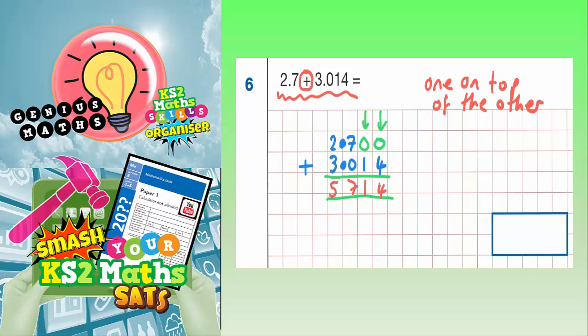The only thing that's missing is the decimal point. So your decimal point's just lined up in the correct column already. So your decimal point needs to go in there.